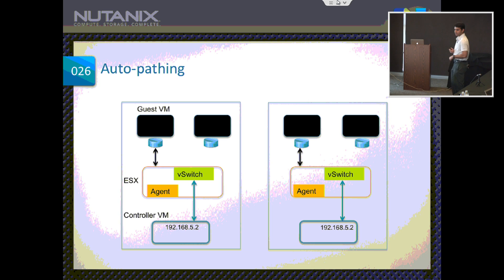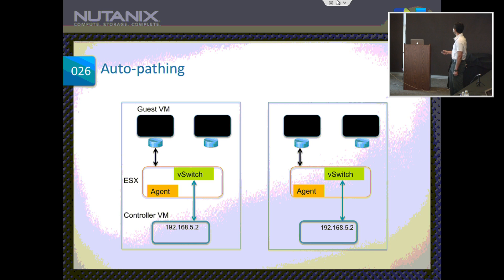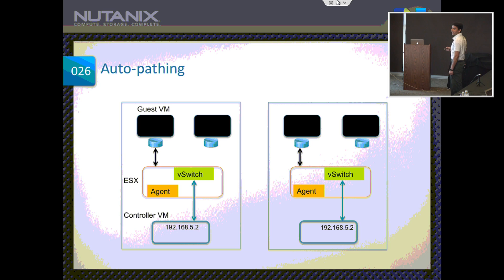Let me demonstrate with some pictures. Here is one server and another server. Guest VMs are shown in black, and they write to their SCSI disks, a virtualized device. The SCSI IO request comes to ESX, which contains a virtual switch and our smart agent. The controller VM also sits on that node managed by ESX. Each controller VM exports the datastore IP address — internal to that node. I've taken a sample address of 192.168.5.2. The other node exports exactly the same IP address — that's why ESX doesn't know the difference.